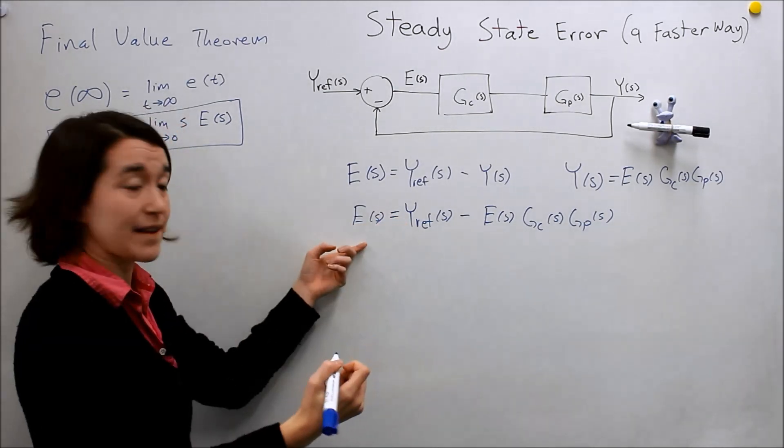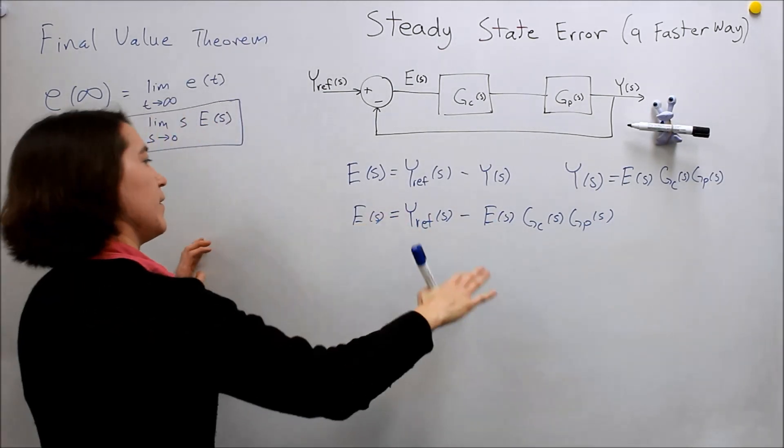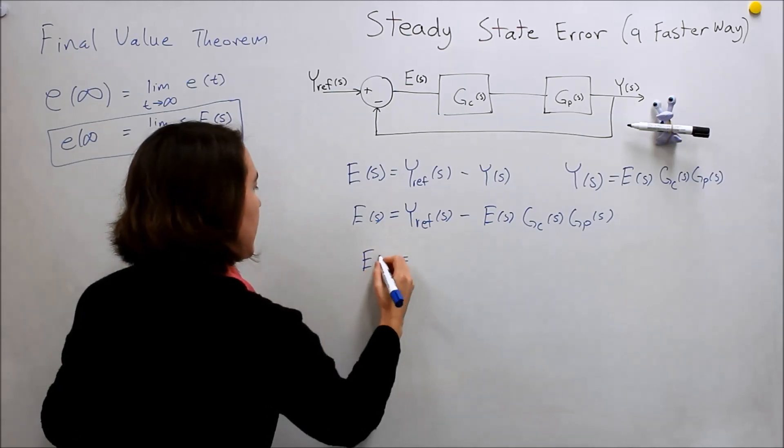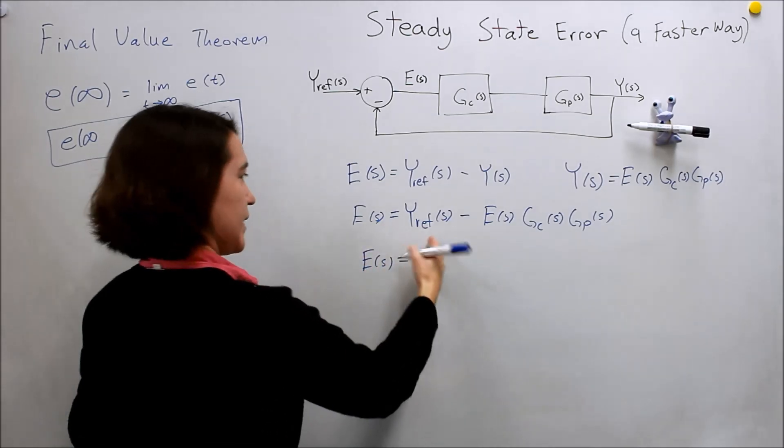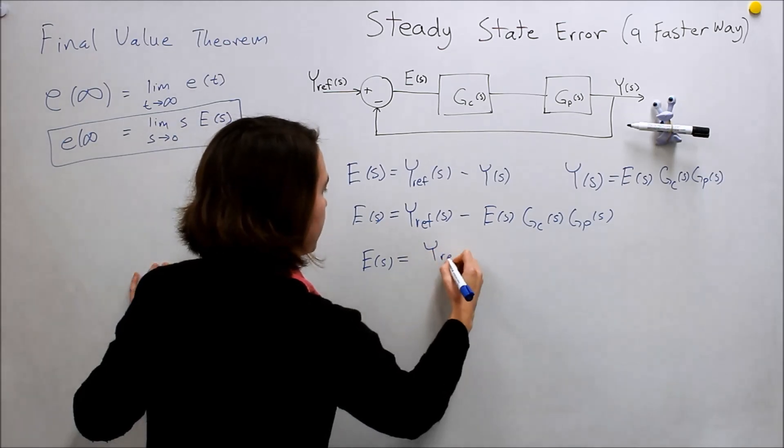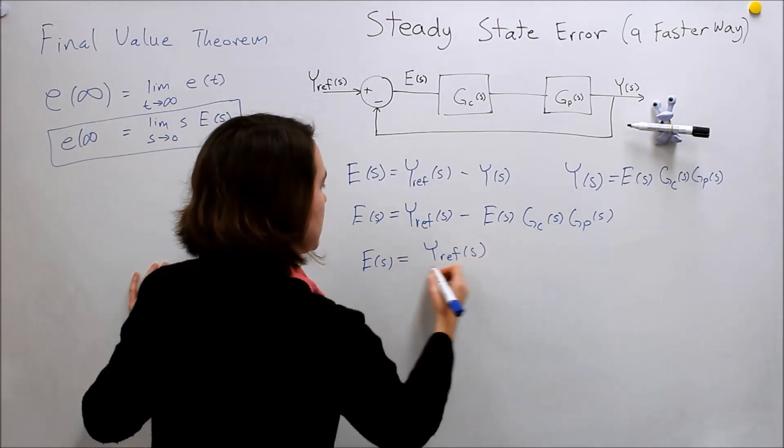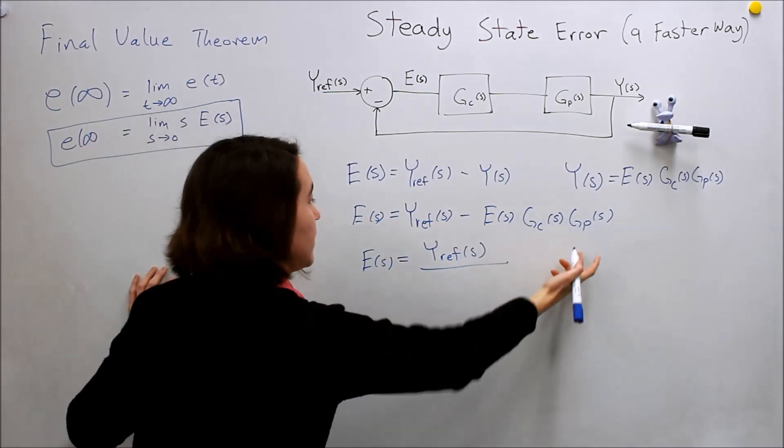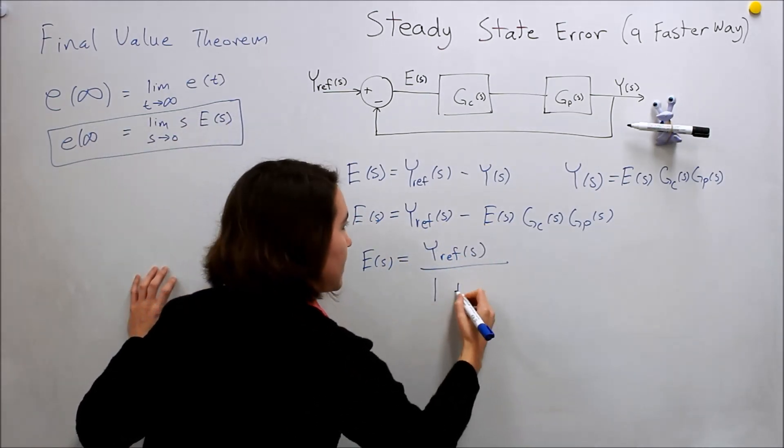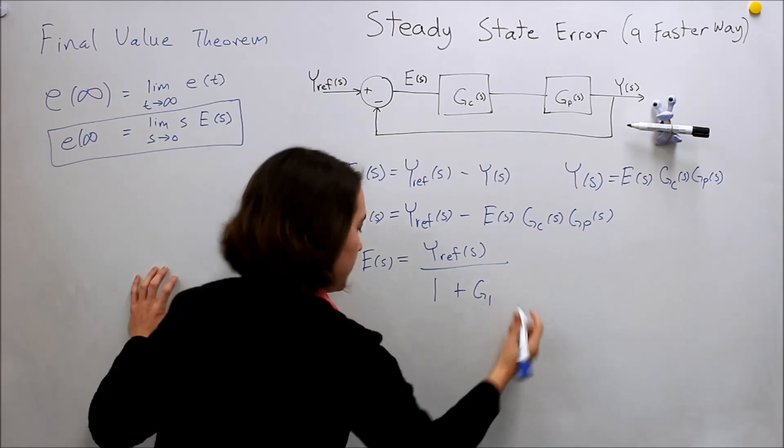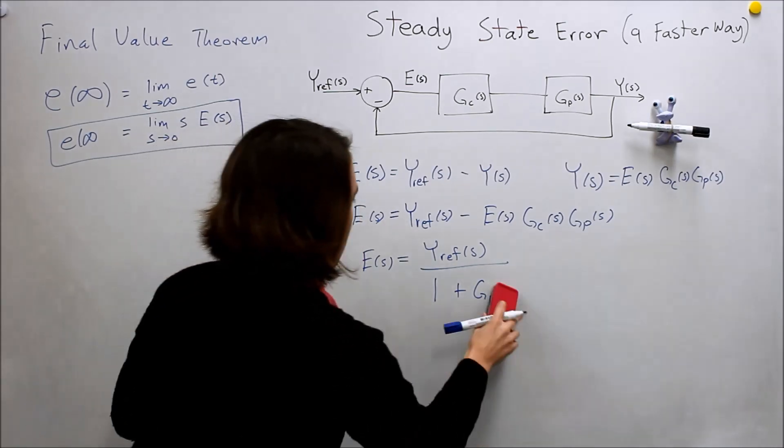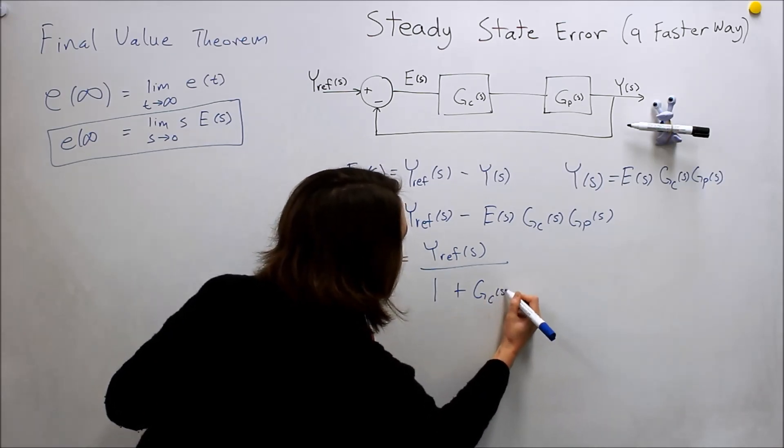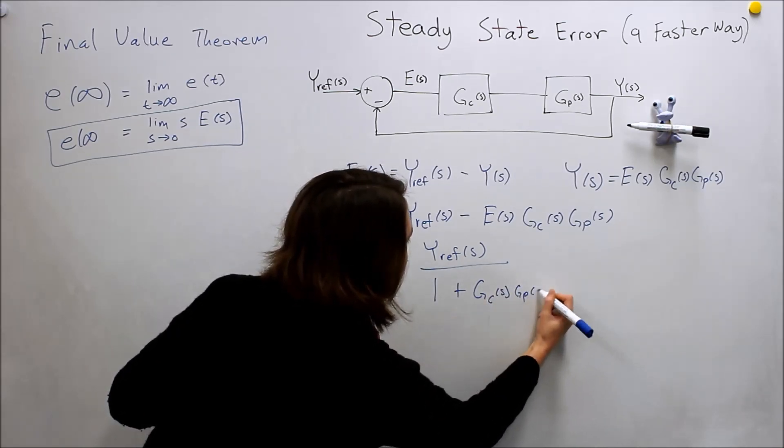And again, we want to find e by itself, right? So we move this over and divide some stuff out. And we should get e of s is equal to this in the numerator, y ref of s. And we move this over and then divide it, so it'll be one plus the two g values, so one plus gc of s, gp of s.